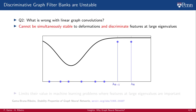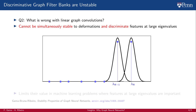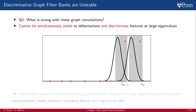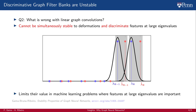The problem with linear graph convolutions involving integral Lipschitz filters is that, while they are stable, they cannot discriminate features at large eigenvalues. If we want to discriminate between two signals — one whose whole energy is located at λ_{n-1} and the other at λ_n — then we need filters narrow enough to separate both frequencies. But these filters are not integral Lipschitz; at most, they are just plain Lipschitz. So when we have a small perturbation, because the eigenvalues we want to separate are large, they will fall outside of the passband in the perturbed graph. This limits the value of linear filters in machine learning problems, particularly those where features at large eigenvalues are important.